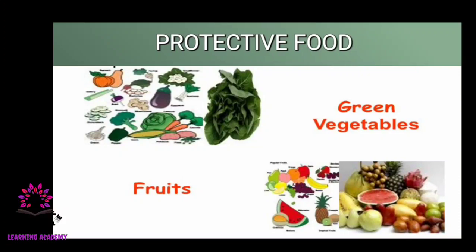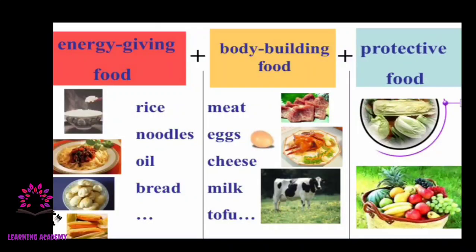So there are three types of food. First, energy giving food — like rice, noodles, oil, and bread. Next, body building food — items that help us grow, like meat, egg, cheese, and milk. Third, protective food — vegetables and fruits that protect our body from various diseases.